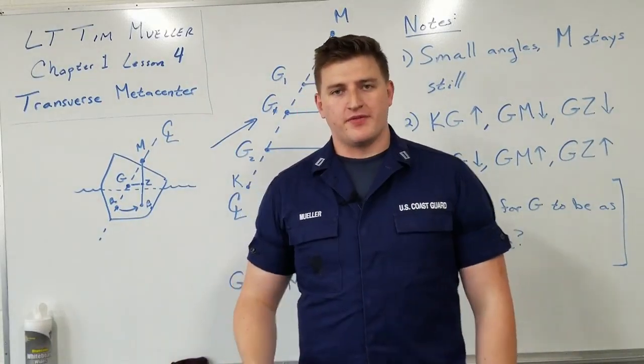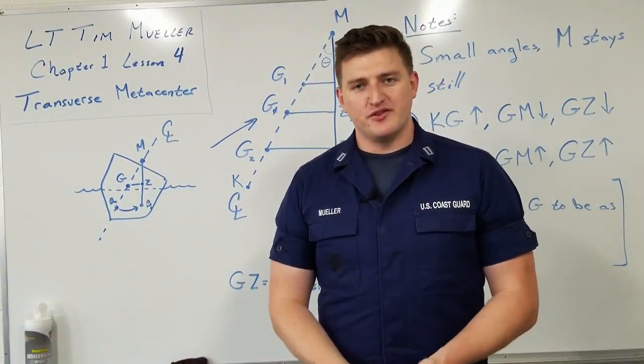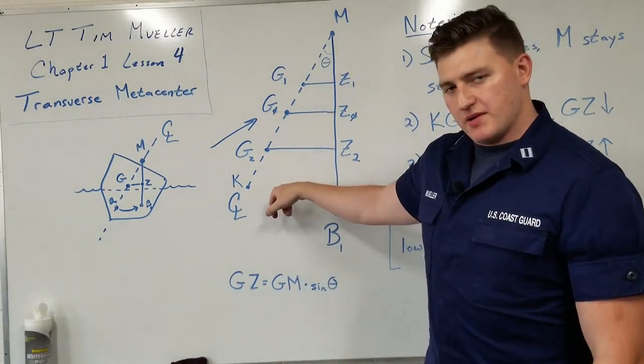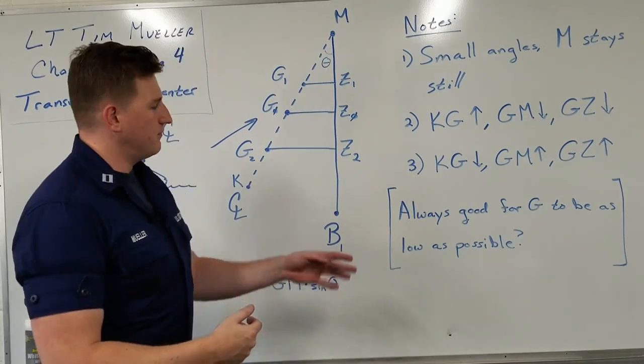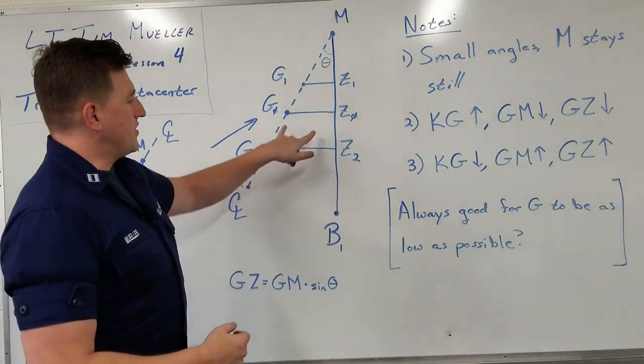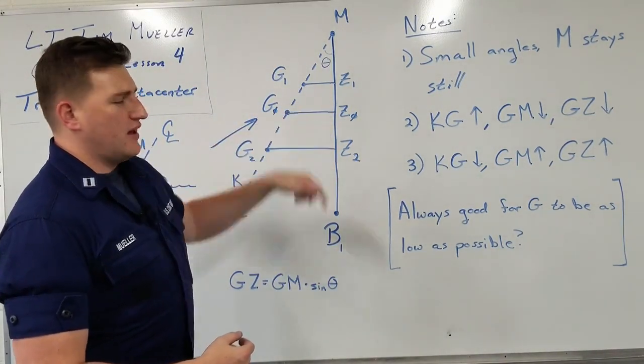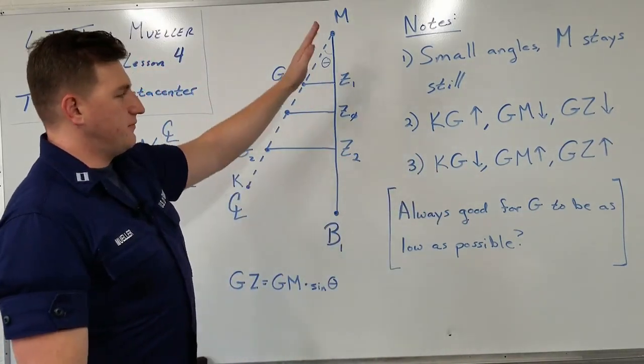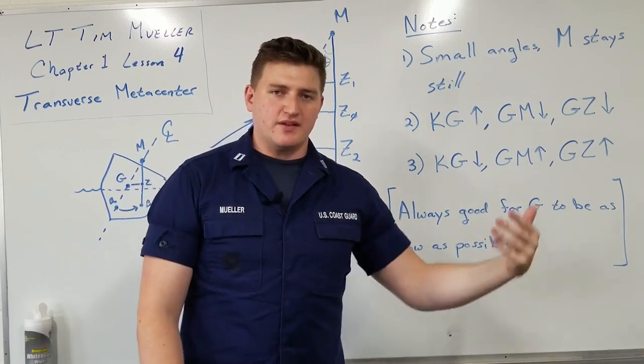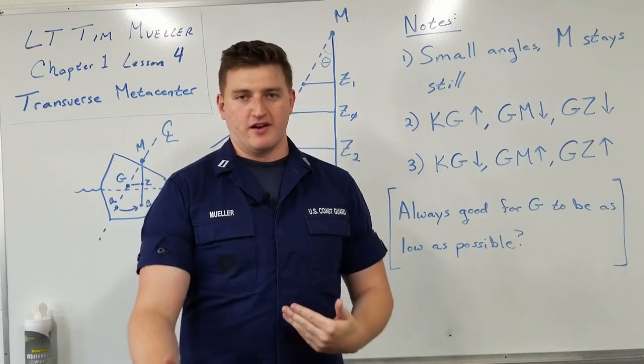So in this video, we talked about the transverse metacenter, we introduced the concept of it, as well as took a look at the stability triangle. We reinforced what we learned about the righting arm, the righting moment, and we saw how the righting arm changes as the center of gravity changes. As the center of gravity goes up, we have less of a righting arm, the center of gravity comes down, we have a bigger righting arm.